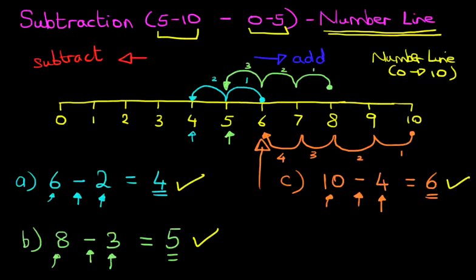And that's it. It really is as simple as that. Subtraction of numbers 0 to 5 from numbers 5 to 10 using the number line.